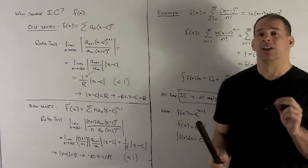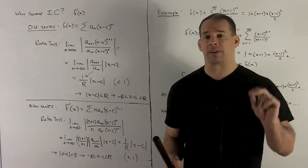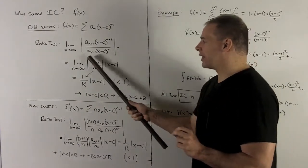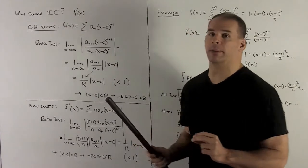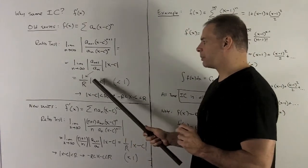Then I'm going to have out in front |a_{n+1}/a_n|. Now to get your radius of convergence, this term here is going to go to 1/r. Then we'll have an |x-c| there.